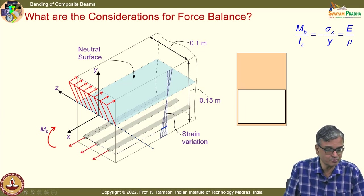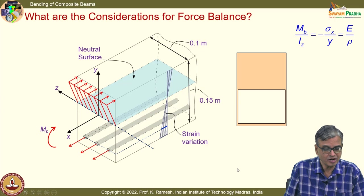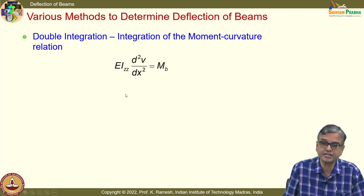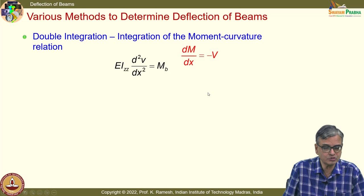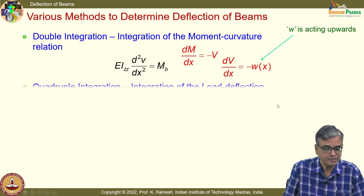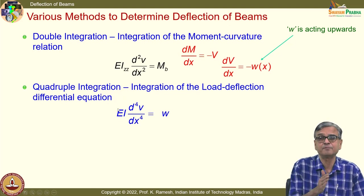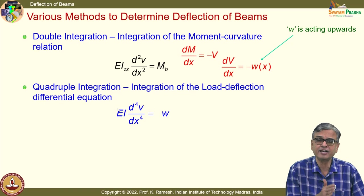We have also looked at various methods to determine the deflection of beams. We have double integration: EI_ZZ d²v/dx² = M_B. Using the interrelationship dM/dx = −V and dV/dx = −w, you get quadruple integration: EI d⁴v/dx⁴ = w. We have been able to take EI out because we are discussing a beam of constant material and constant cross section.